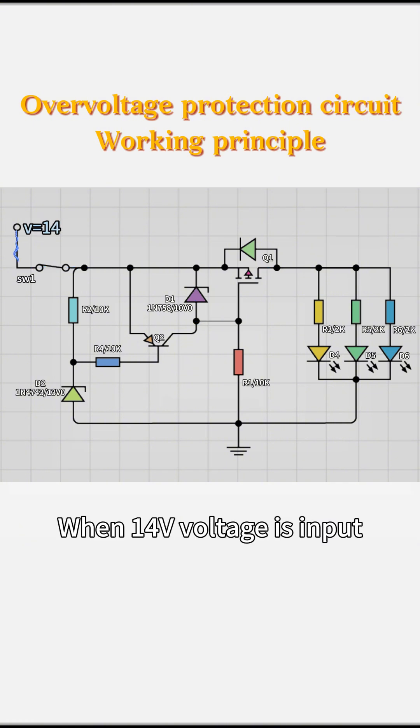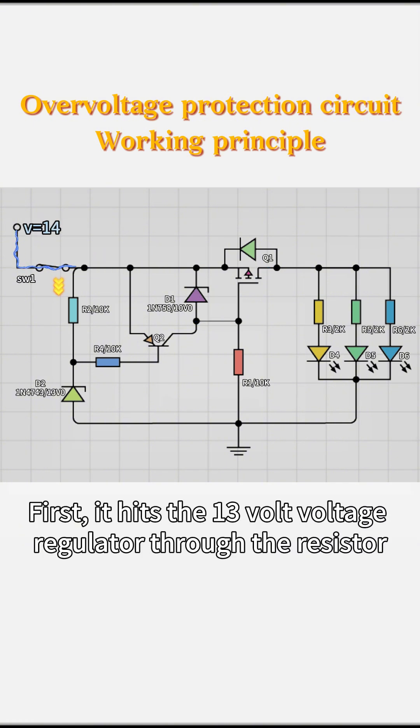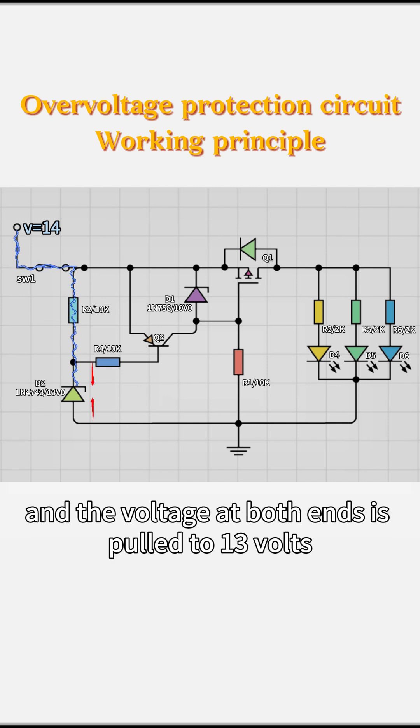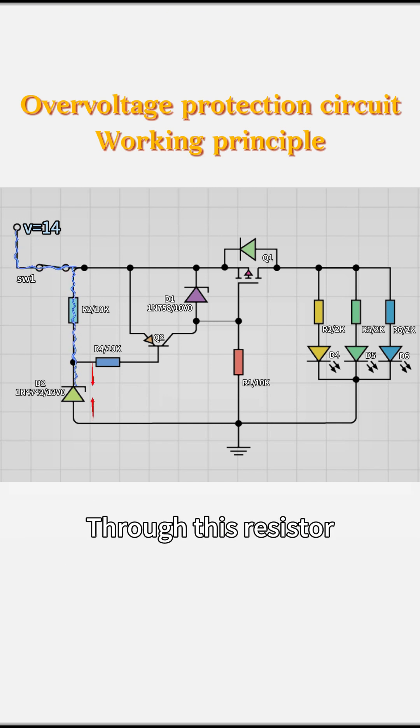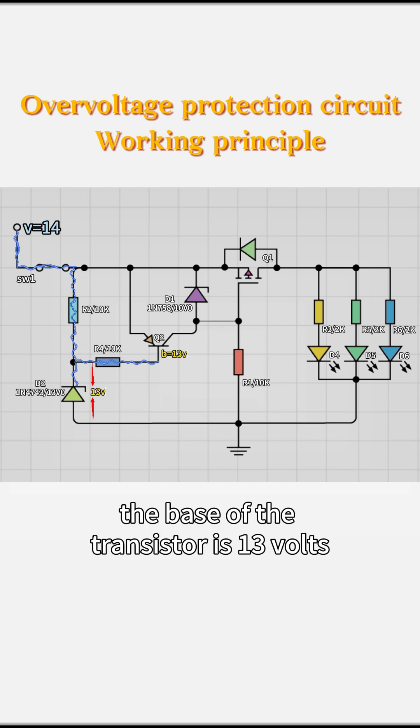When 14V are input, there are also two branches. First, it hits the 13V voltage regulator through the resistor, and the voltage at both ends is pulled to 13V. Through this resistor, the base of the transistor is 13V.